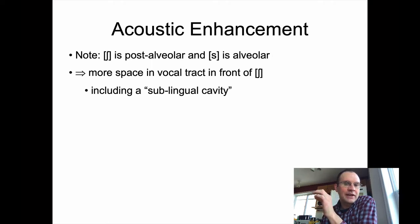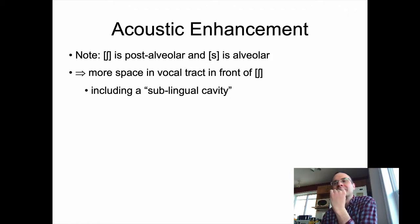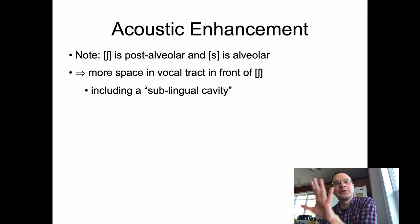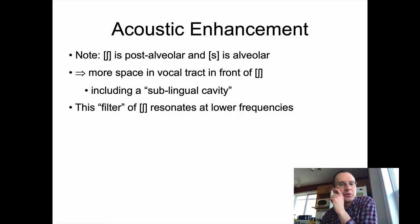On top of that, you get what is called a sublingual cavity — there's a little bit of space underneath the tip of your tongue when your tongue is a bit further back when you're producing an S, and that will resonate as well, along with the length of the tube to begin with.